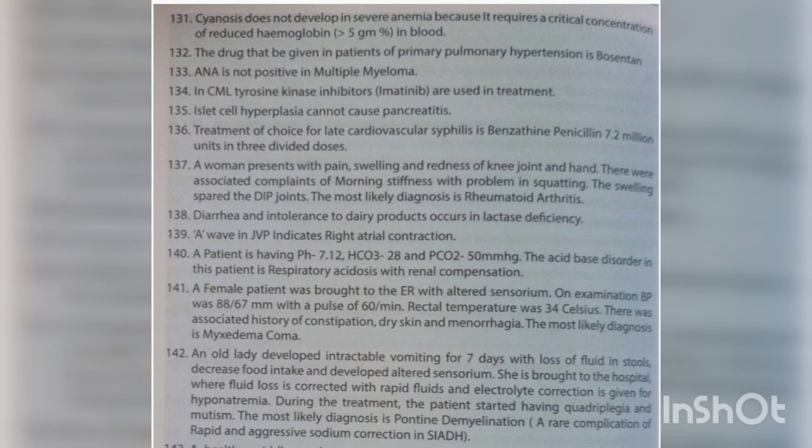Diarrhea and intolerance to dairy products occurs in lactase deficiency. The A wave in JVP indicates right atrial contraction. A patient with pH 7.12, HCO3 28, and PCO2 50 mmHg — the acid-base disorder in this patient is respiratory acidosis with renal compensation.